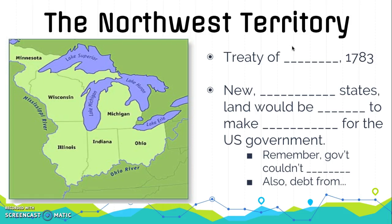Let's start off with how did we get here. The American Revolution ended and the United States won in their fight for independence against Great Britain. Since that happened, Great Britain gave up their land, and the treaty in which they gave up their land was called the Treaty of Paris, signed in 1783. This is when the United States acquires what's known as the Northwest Territory.